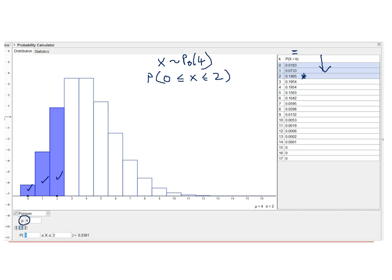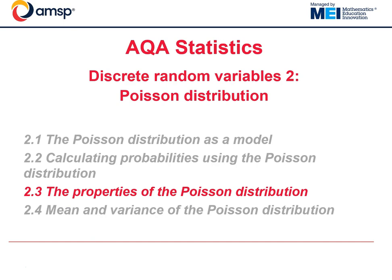You will need to tell GeoGebra the value of the parameter, which is 4, and then you have a choice of less than, more than, or in this case, in between two values. We are in between the values 0 and 2, and you can get the answer from that. It's worth perhaps having a little bit of a play around with that and looking at some different values for lambda, working out some different probabilities. And that's the end of this video.